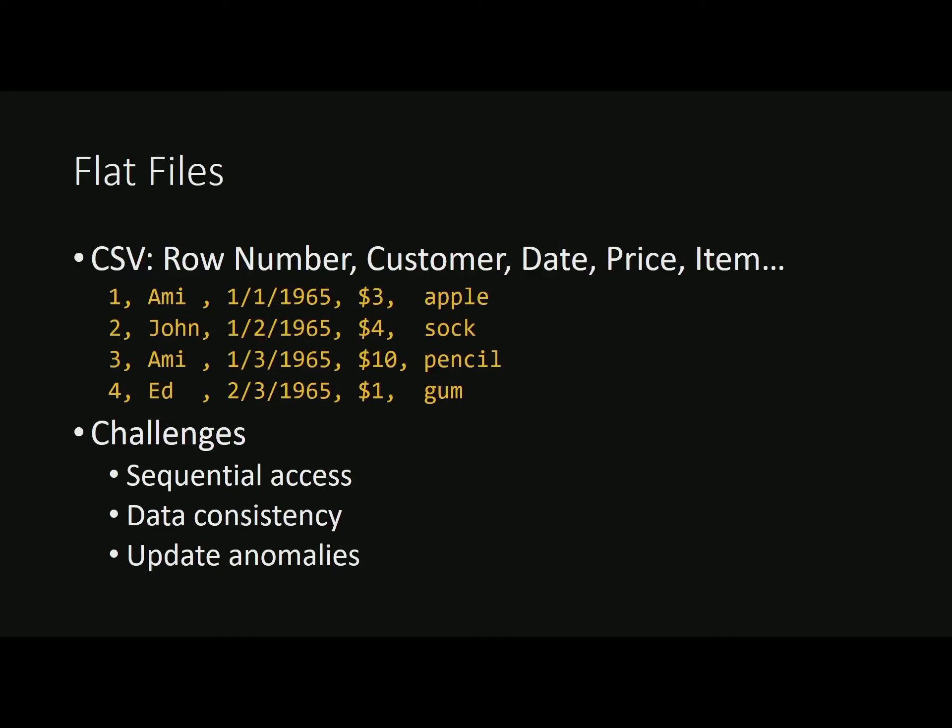Nothing in flat files enforces or guarantees any kind of data consistency. I can put names that don't exist, strings instead of dates, negative prices, items that never existed — nothing guarantees data consistency. And when there is a gap that big for inconsistencies to creep in, they always do. Update anomalies are another challenge. If I need to change the name AMI and it appears a hundred times in the document but I only update it in 99 places, good luck figuring out who AMI is and what orders he made.